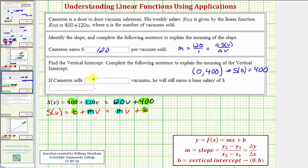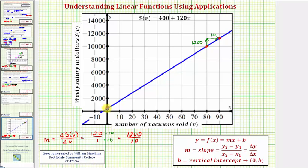So the meaning is, if he sells zero vacuums, he will still earn a base salary of 400 dollars. Looking at this graphically, here's the vertical intercept, which we know has coordinates (0, 400). If he sells zero vacuums, he still makes 400 dollars.